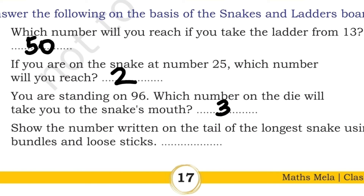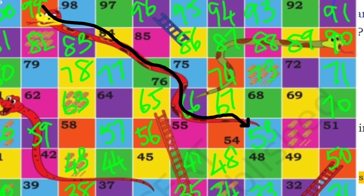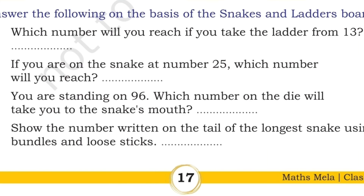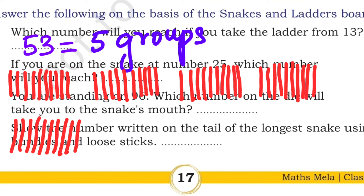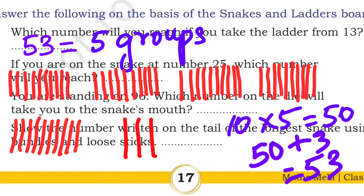Last question: show the number written on the tail of the longest snake using bundles and loose sticks. Let's look at the longest snake — its head starts at number 99 and its tail reaches number 53. We can divide 53 into 5 bundles of 10 each: 10 fives are 50, and 3 loose sticks. So 50 plus 3 is 53.